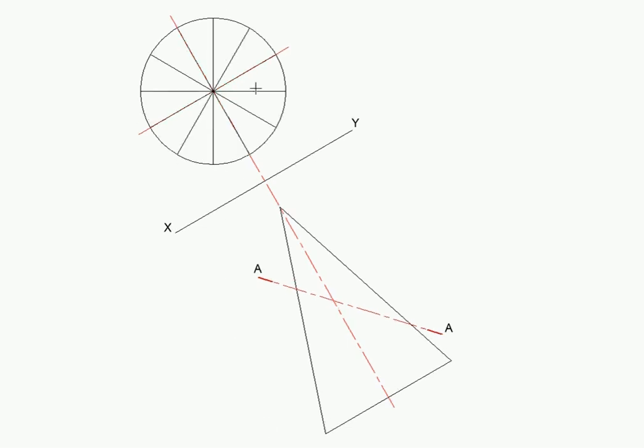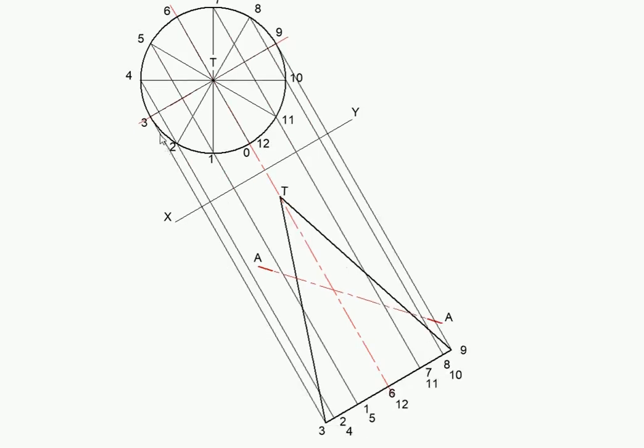You can now see that I have divided my base or this auxiliary view, I have divided that into 12. And I'm going to label it from 0 to 12. Starting at 0, 1, 2, going right around and getting to 12. I've projected all these points, 4 and 2, 1 and 5.